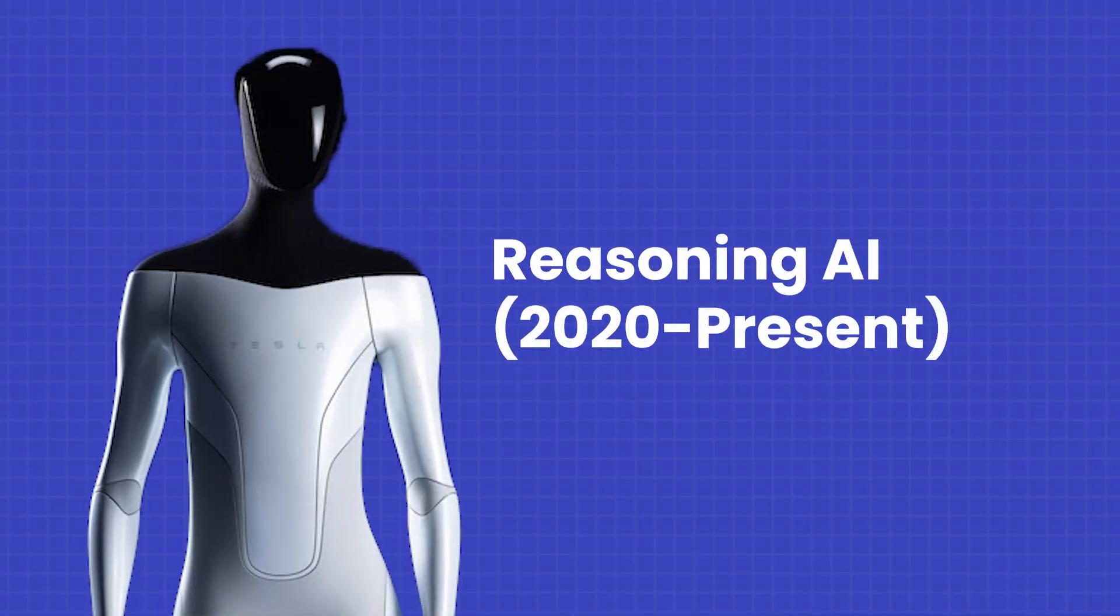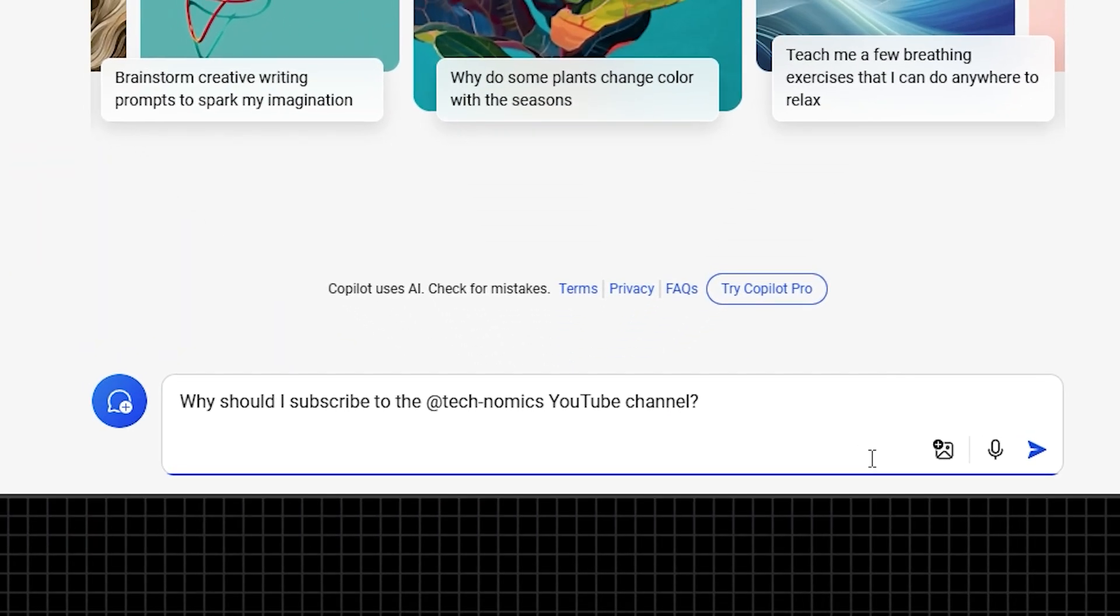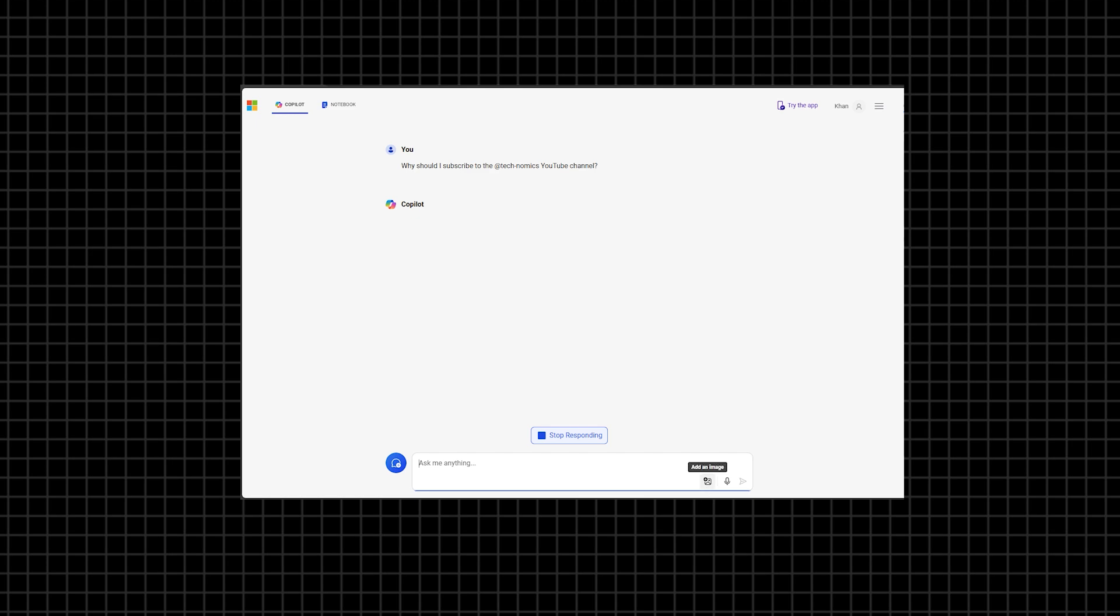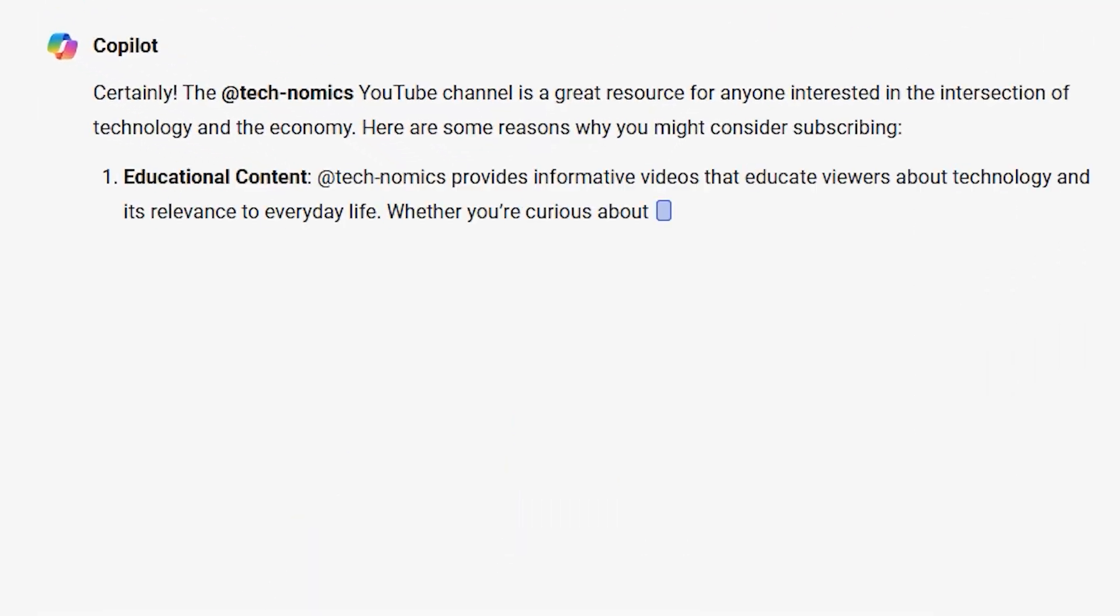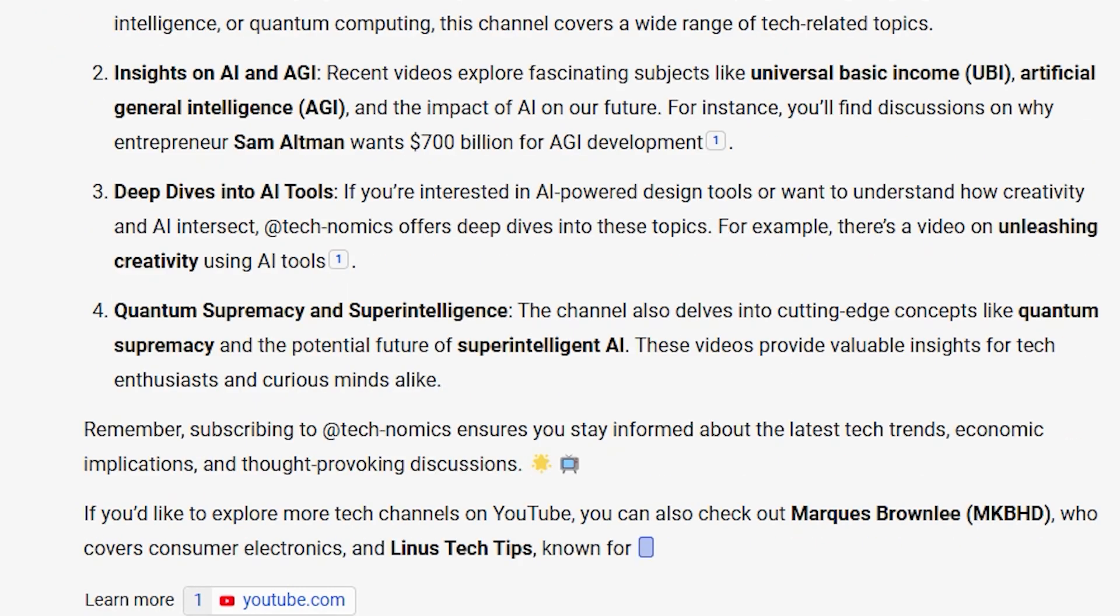And here comes stage four, reasoning AI. It mimics the complex thought processes humans use. For example, ChatGPT is a prime example of reasoning AI because it not only gives amazing answers, but also provides reasons for those answers.